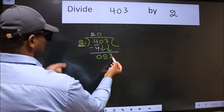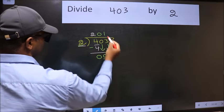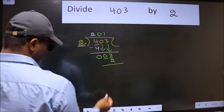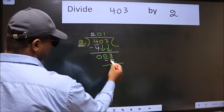Now 3. A number close to 3 in the 2 table is 2 times 1 is 2. Now we should subtract. We get 1.